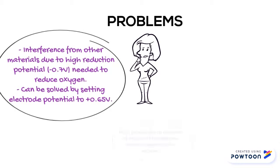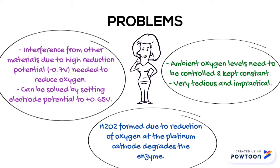There are three problems with the first generation biosensor. The first problem is interference from other materials due to the high reduction potential needed to reduce oxygen; it can be solved by setting electrode potential to positive 0.65 V. The second problem is that hydrogen peroxide from the reduction of oxygen at the platinum cathode degrades the enzyme. The third problem is that ambient oxygen level needs to be controlled and kept constant, which is very tedious and impractical.